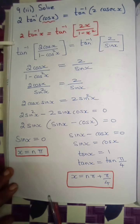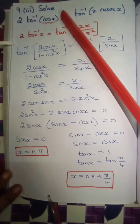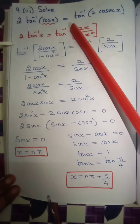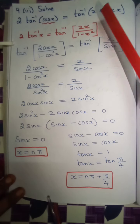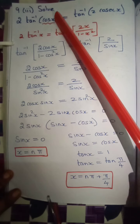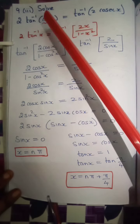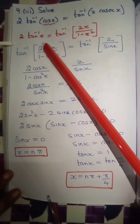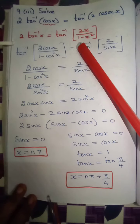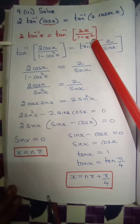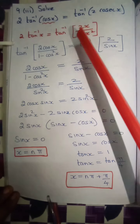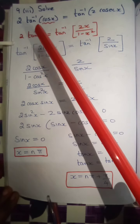Exercise 4.5, ninth question, third subdivision. Solve: 2 tan inverse of cos x equals tan inverse of 2 cosecant x. In the LHS portion, we are going to use the property: 2 tan inverse of x is equal to tan inverse of (2x by 1 minus x square).